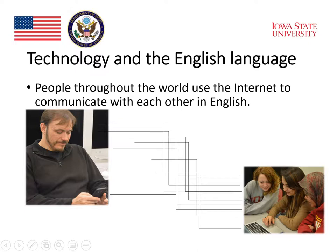With the increase in modes of communication that technology provides, people throughout the world are able to connect using the Internet, and a lot of that communication is done in English. English has become the global language — the language many people use for communication because so many people know it. English has a special relationship with technology because the spread of technology has often been accompanied by the spread of English, the spread of opportunities to learn English, and opportunities to communicate with a variety of different people throughout the world.